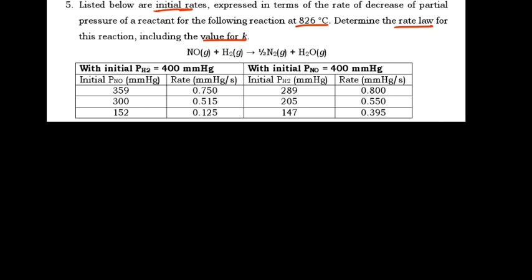This table is unique from the tables you've seen so far, in that instead of searching for the partial pressures of both nitrogen oxide and hydrogen, one of them has already been held constant. You can extend every part of this table for easy understanding. On the left, the initial partial pressure of hydrogen was 400 mmHg constant throughout, and similarly nitrogen oxide was also constant at 400 on the other side.